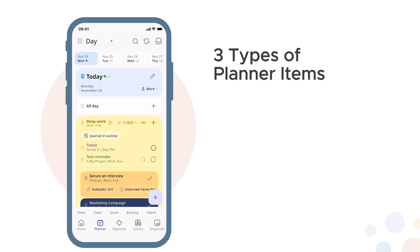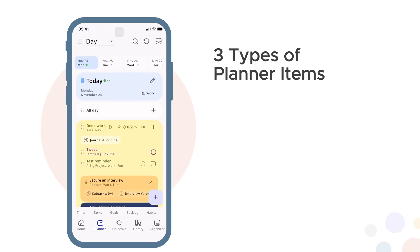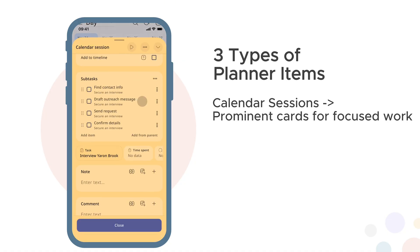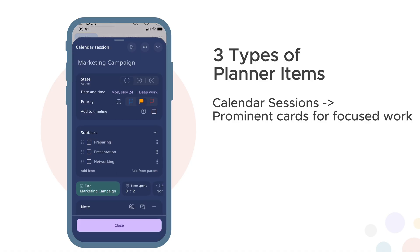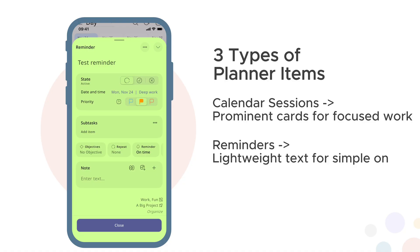Three types of planner items. Most planners treat everything as a single task type — important deep work looks exactly like 'buy milk.' You can't see what needs focus versus what's a quick reminder. Journalit uses three distinct planner item types, each with different visual weight. Calendar sessions are prominent cards for work that deserves attention — deep work sessions, meetings, focus time. They support the Pomodoro timer. When you look at your day, these stand out.